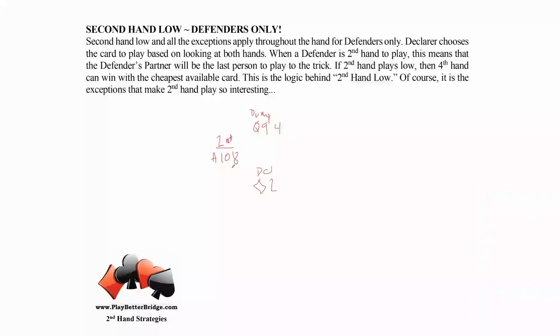We're talking about the theory behind it. So we play second hand low, declarer plays the queen from dummy, and fourth hand—your partner—gets to capture an honor with, let's say, the king.